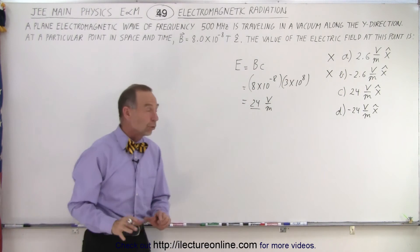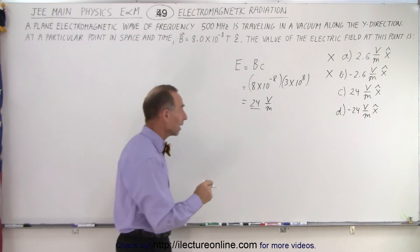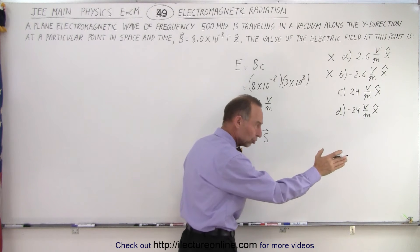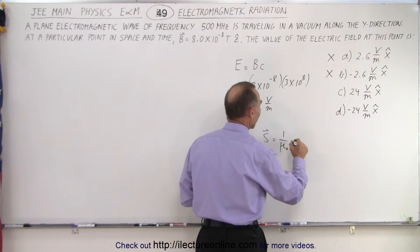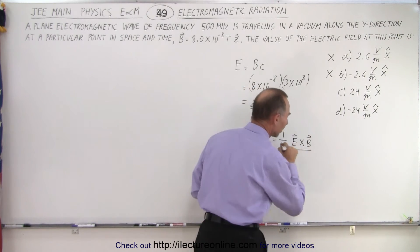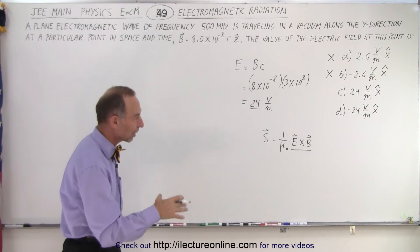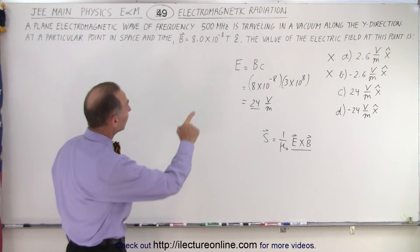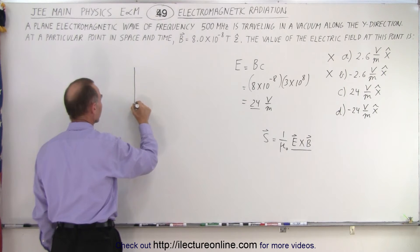That's the magnitude, but what about the sign? To figure out the sign, we have to use the Poynting vector — the vector along the direction of motion. It's equal to 1 over mu-naught times E cross B. It's important to realize E comes first, then B, in order to find the direction of the Poynting vector. We're told the direction of travel is in the Y direction, so let's draw the three-dimensional coordinate space.